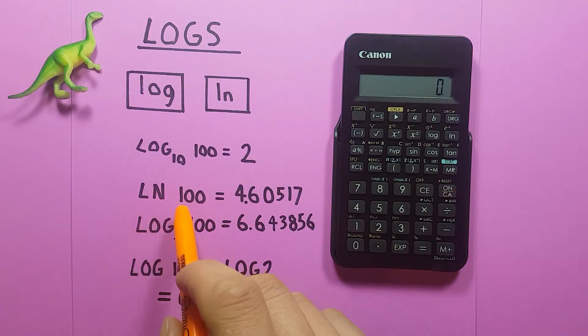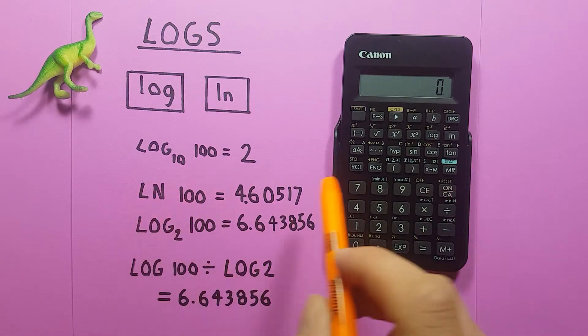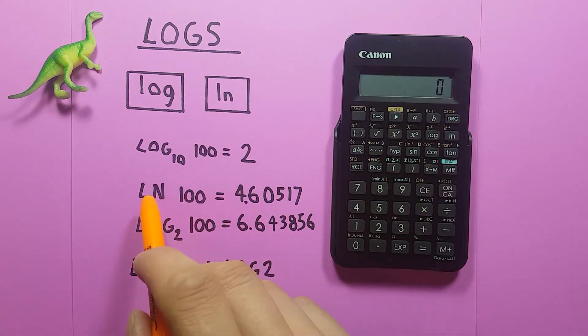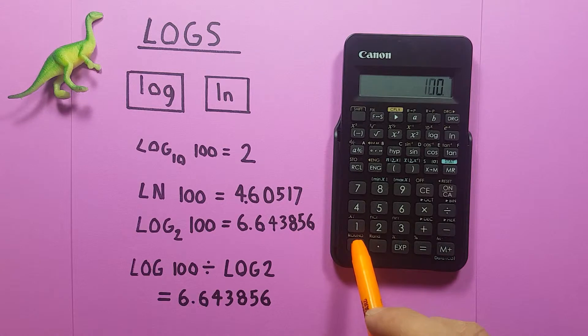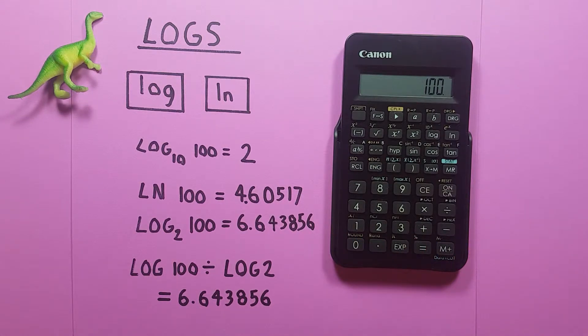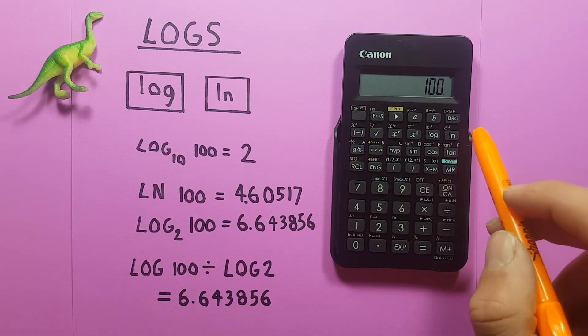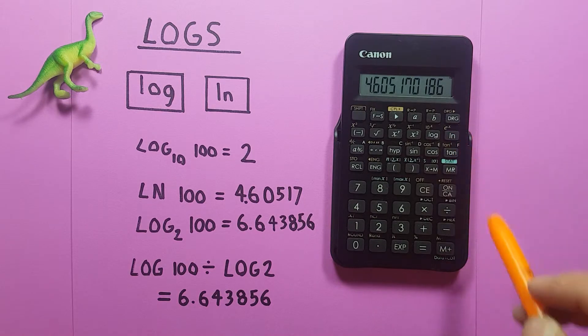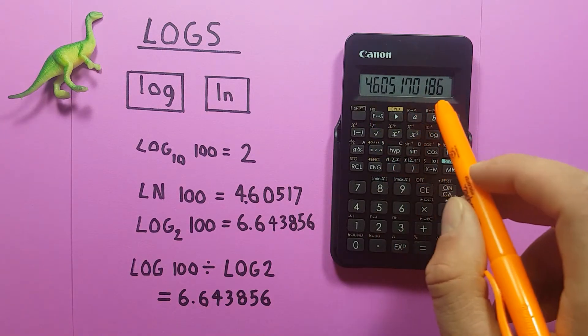We can also find the natural log easily with the ln key. So if we wanted to find the natural log of 100, we would place 100 on the screen and then press the ln key, which would give us the natural log of 100.